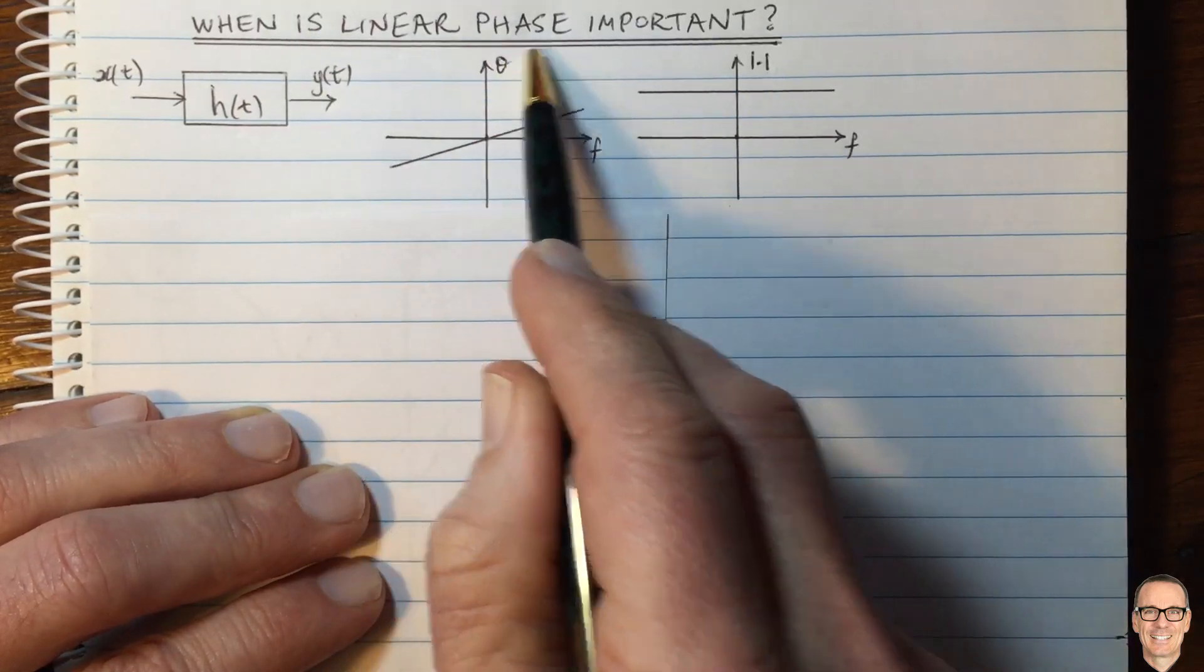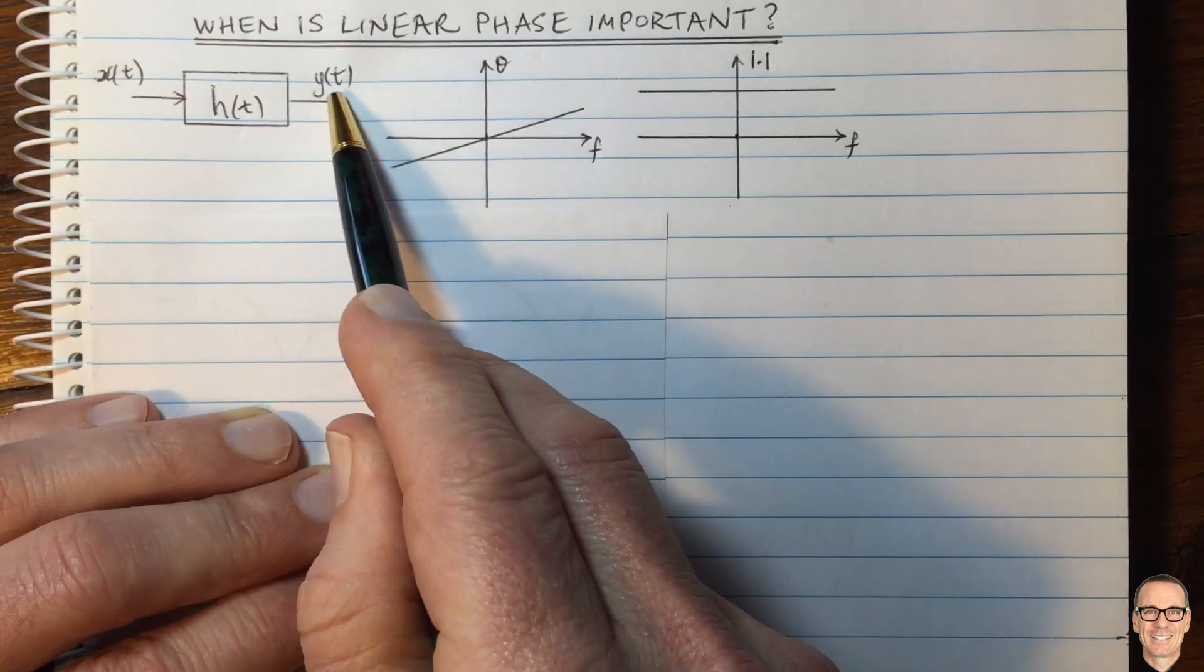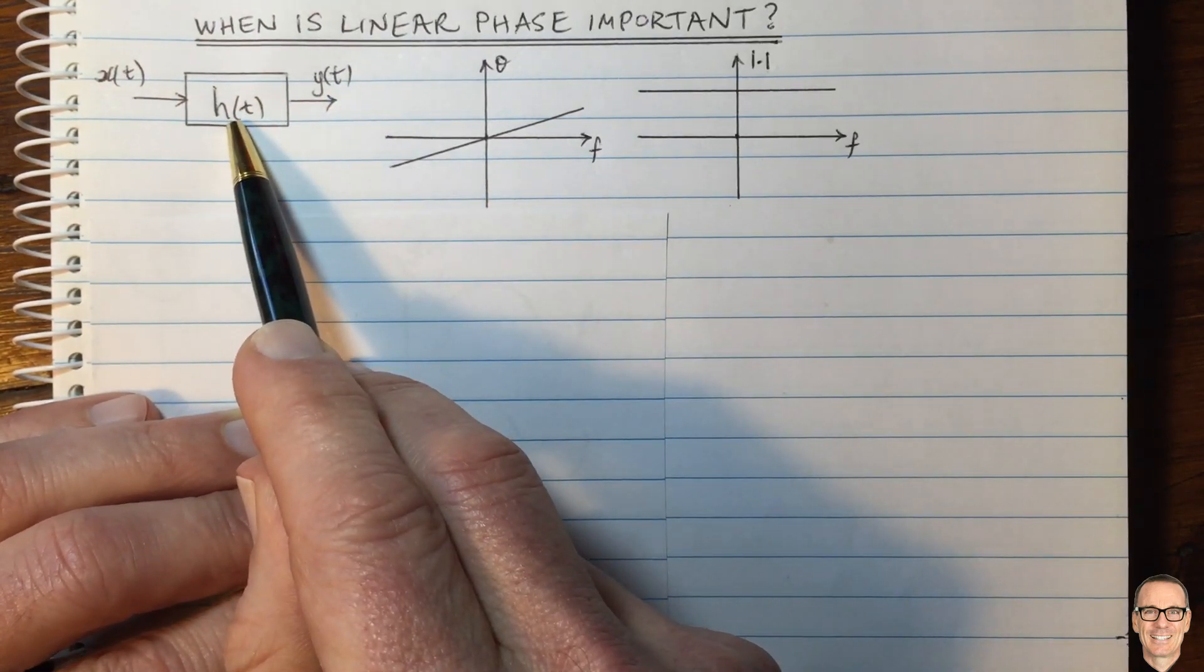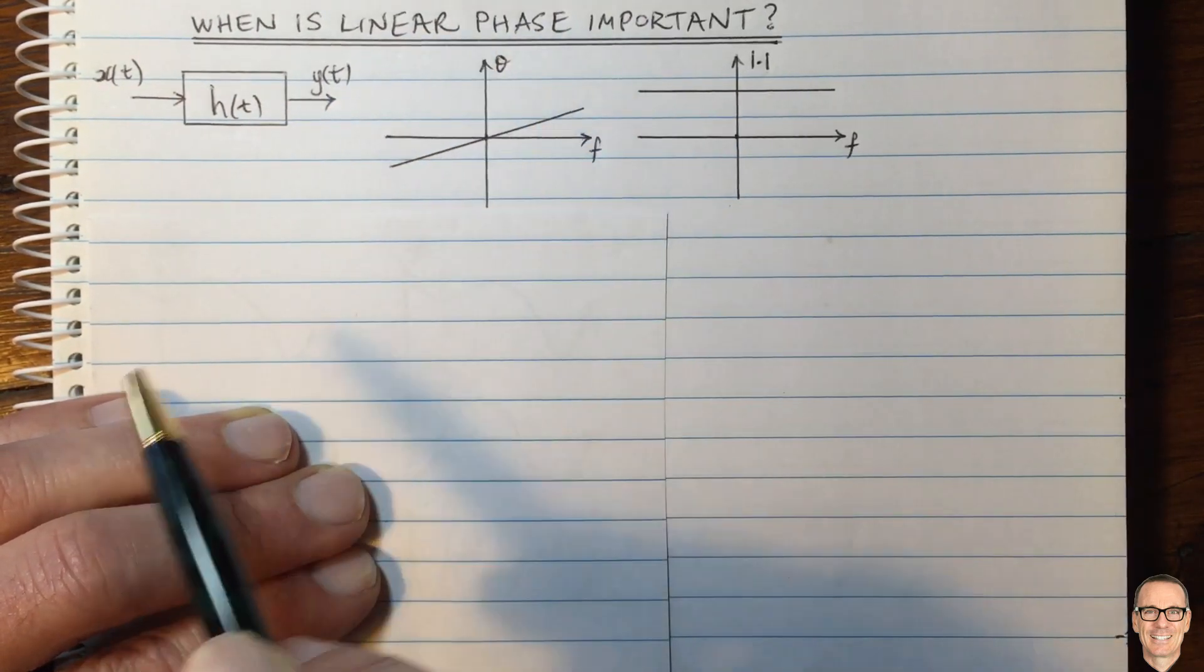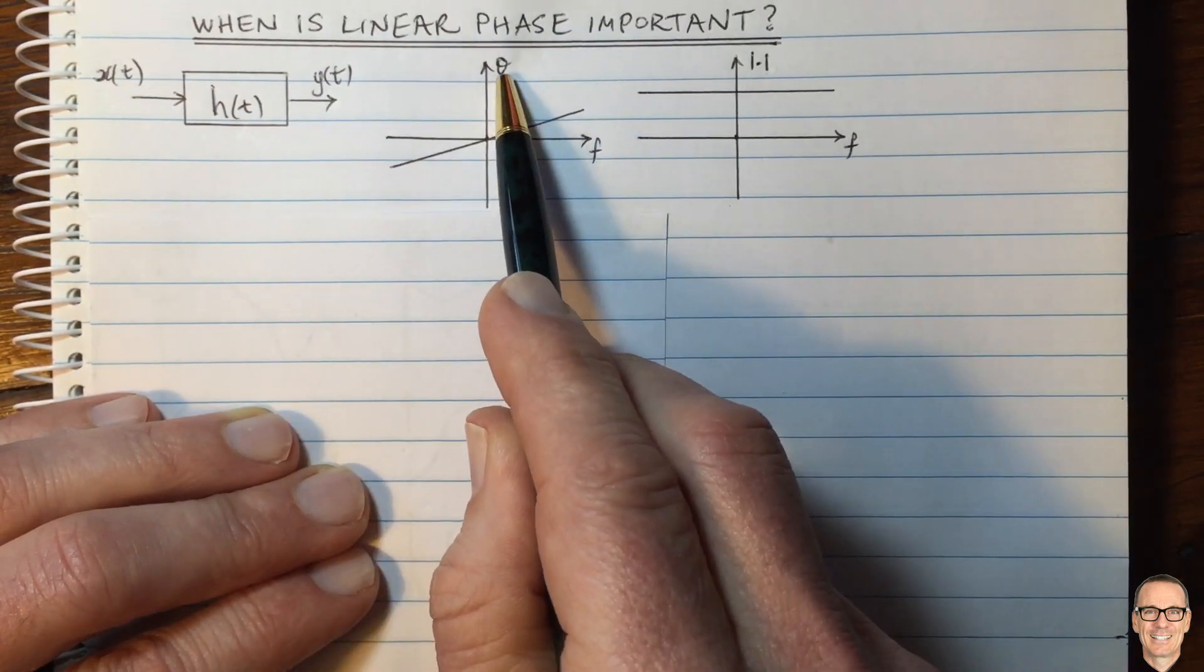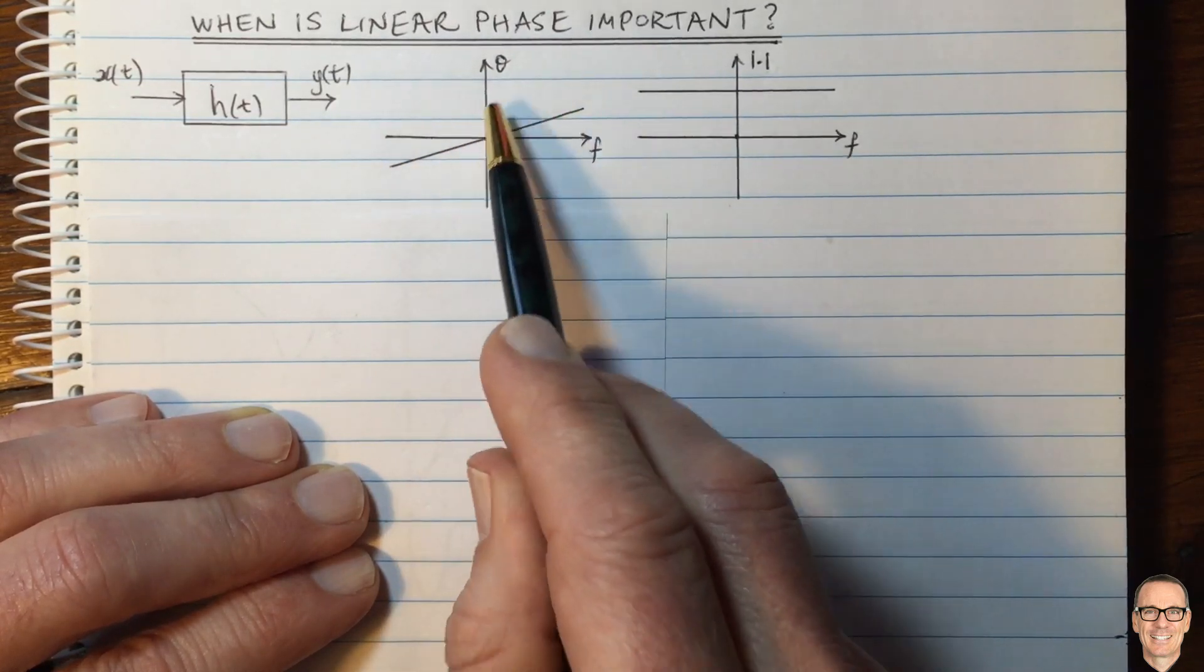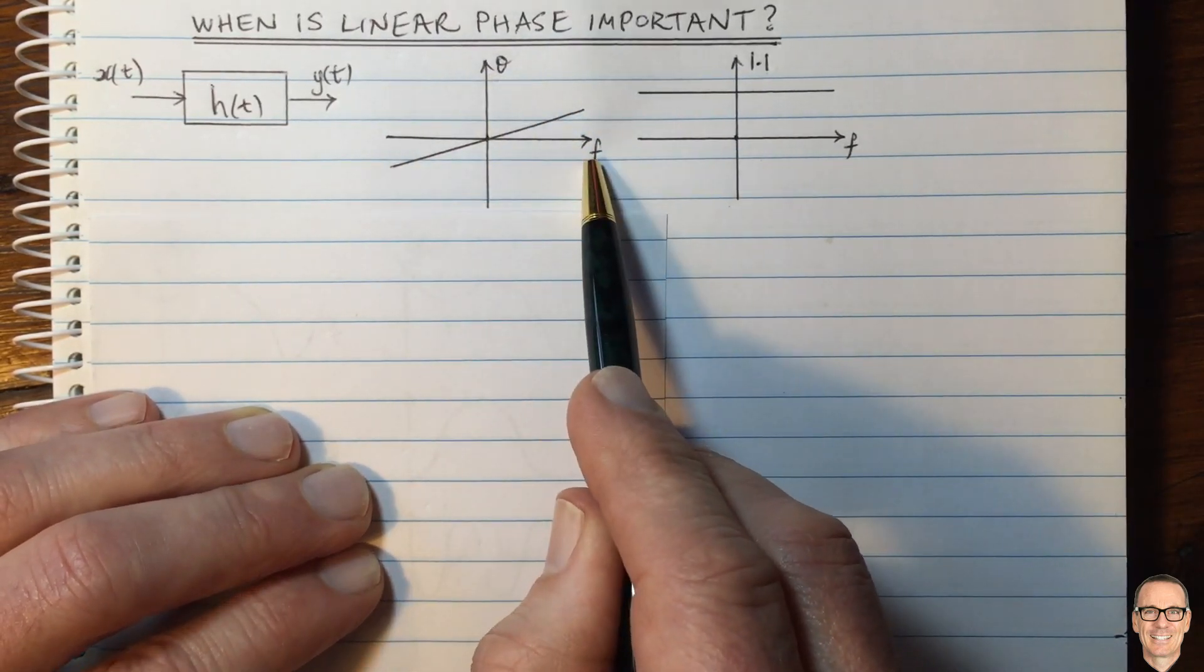When is linear phase important? Well, here we have a system with an input and an output and an impulse response. And what we mean by linear phase is that the response has a phase which varies linearly with frequency. So here we are, it's a straight line function between the phase and the frequency.